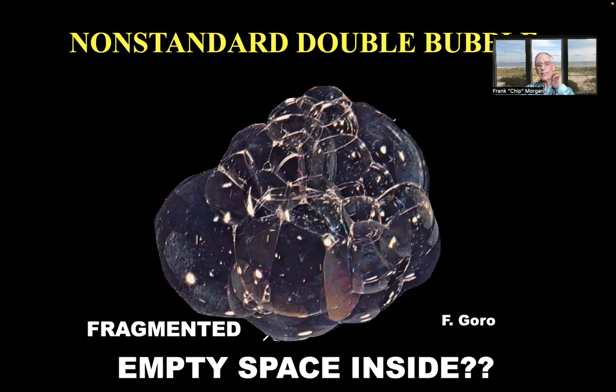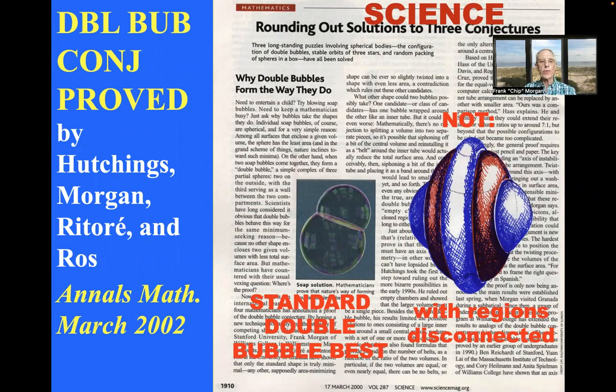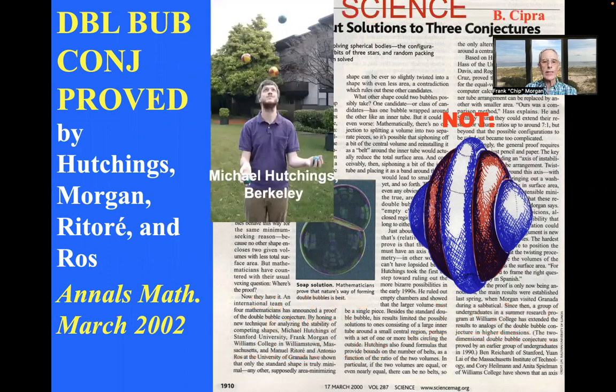And it took us about eight years until we had a proof that the standard double bubble was better than any of these crazy alternatives. And one of my co-authors in this was one of my former undergraduate research students, Michael Hutchings, who's now professor of mathematics at Cal Berkeley.